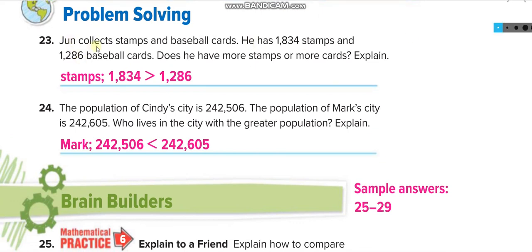John collects stamps and baseball cards. He has one thousand eight hundred thirty-four stamps and one thousand two hundred eighty-six baseball cards. Does he have more stamps or more cards? Since eight hundred is greater than two hundred, he has more stamps. Next: the population of Cindy's city is two hundred forty-two thousand five hundred six, and Mark's city is two hundred forty-two thousand six hundred five. In the thousands period, both have two hundred forty-two. Comparing further: six hundred five is greater than five hundred six, so Mark's city has the greater population.